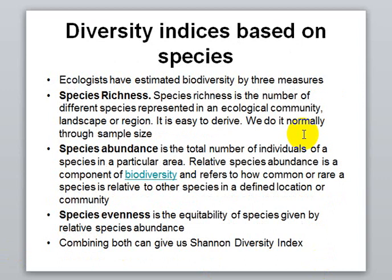Ecologists have estimated biodiversity using three indices. Species richness simply implies the types of species present — how many species are found in a certain locality. Species abundance is the number of individuals of a particular species, meaning what is the population of that particular species in a certain region.